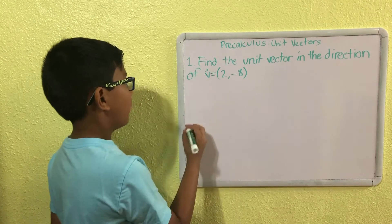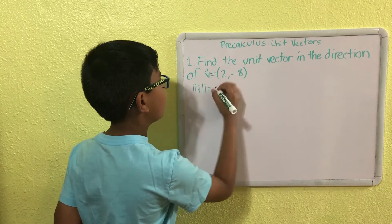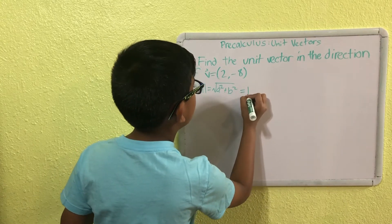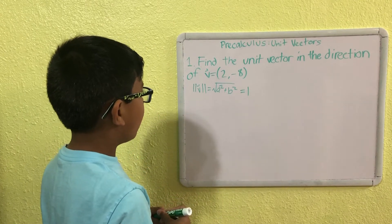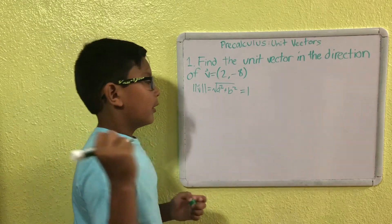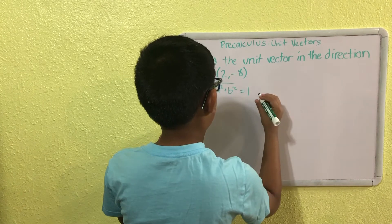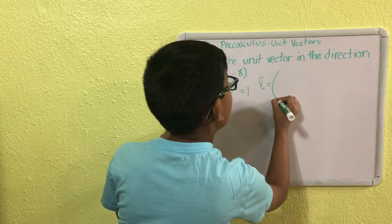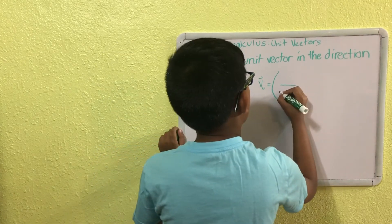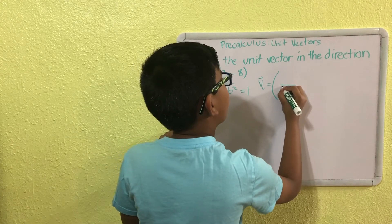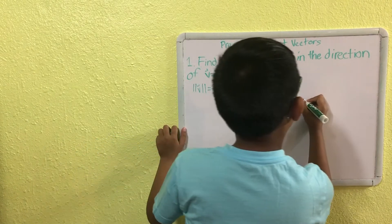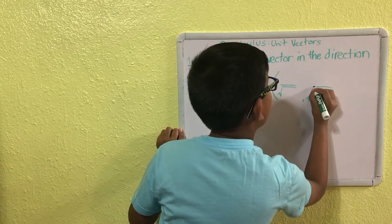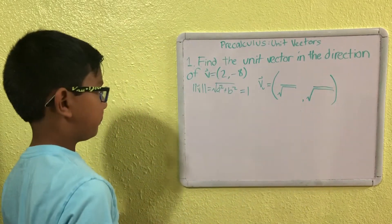The magnitude of a vector equals the square root of a² plus b². For a unit vector, this is going to be equal to one. To find the unit vector in the direction of vector V, we write vector V with a subscript 'u', and it's equal to a fraction — we have a square root in the numerator and a square root in the denominator, repeated for each component.